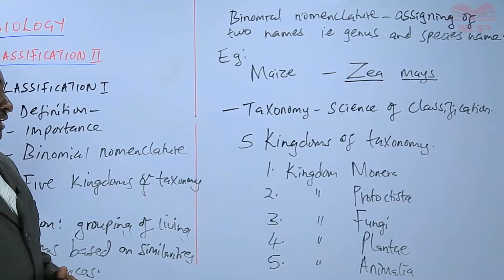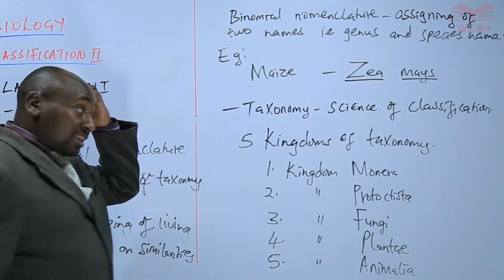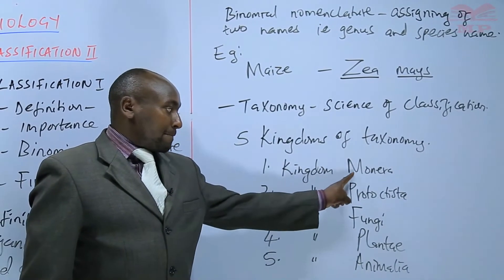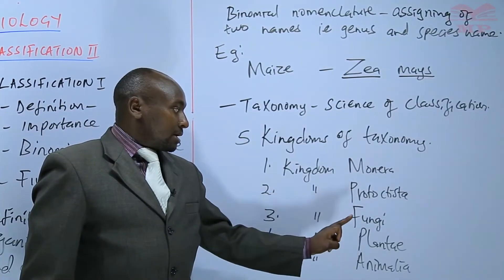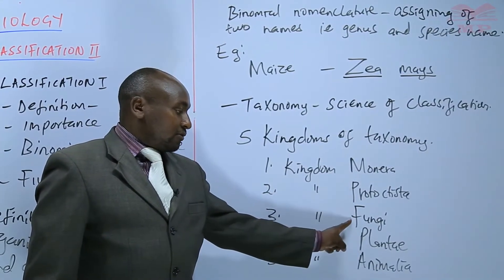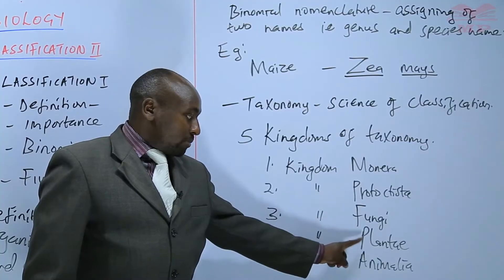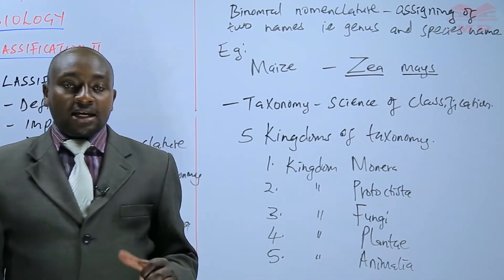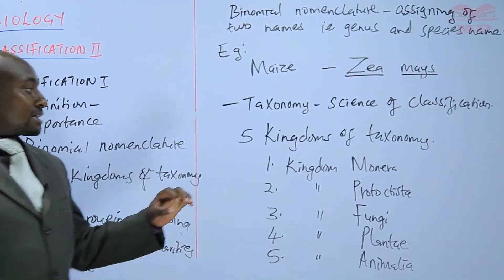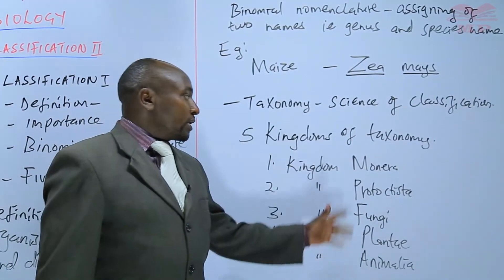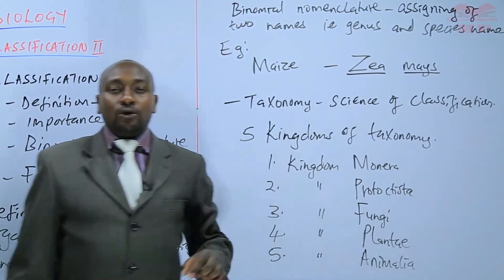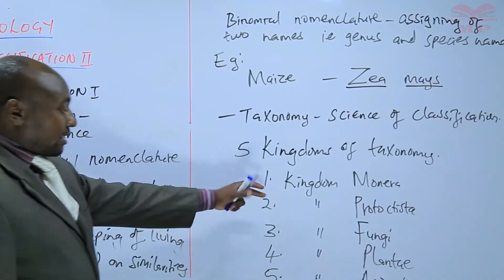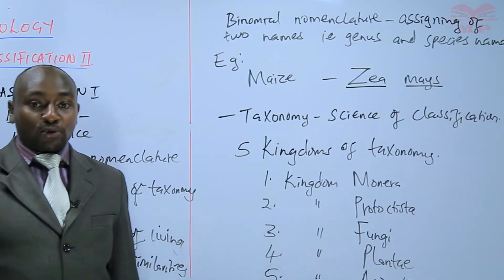When you are writing the names of the kingdoms, the first letter should be capital: M for Monera, P for Protocytista, F for Fungi, P for Plantae, A for Animalia. You need to follow the rules that are supposed to be followed during taxonomy. Those are the five kingdoms of taxonomy.